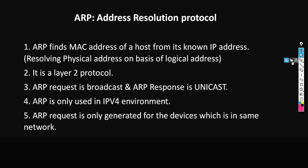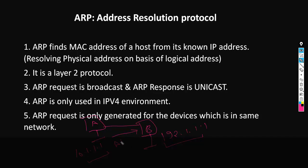ARP request is only generated for devices which are in the same network. For example, we have two machines: Machine A and Machine B. The IP address of Machine A is 10.1.1.1 and the IP address of Machine B is 192.1.1.1. Both machines are in different networks, so Machine A will not be able to generate an ARP request for Machine B. This is the basic understanding of ARP.